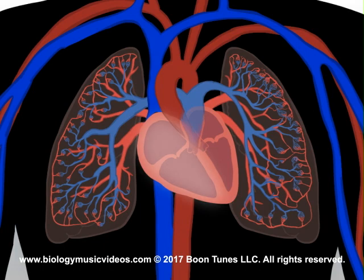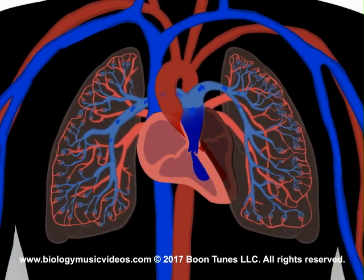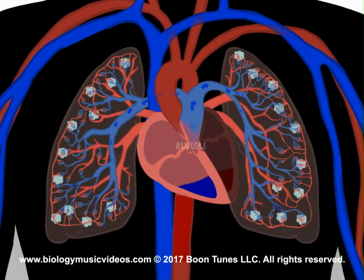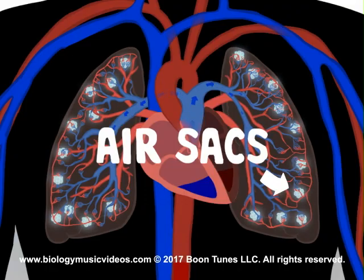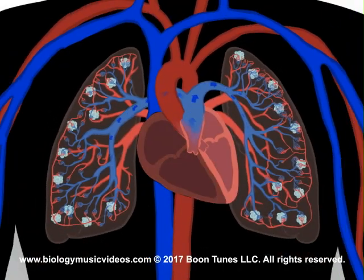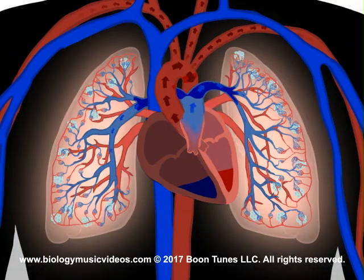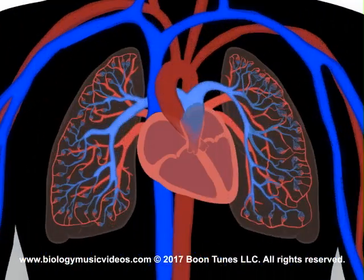The cardiac septum lengthwise divides the heart into left and right sides. The right side pumps venous blood, in fact, to the lungs' alveoli, or air sacs. The left side simultaneously pumps blood from the lungs throughout the body.